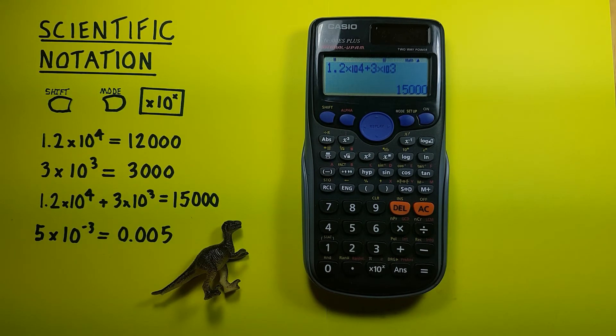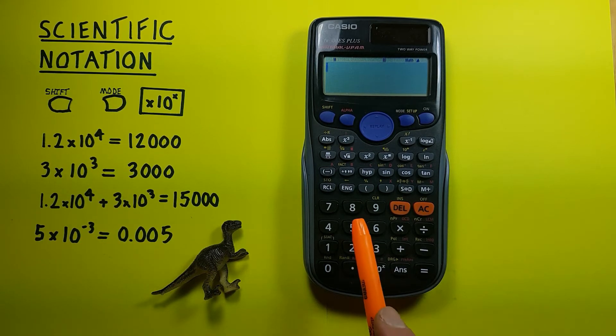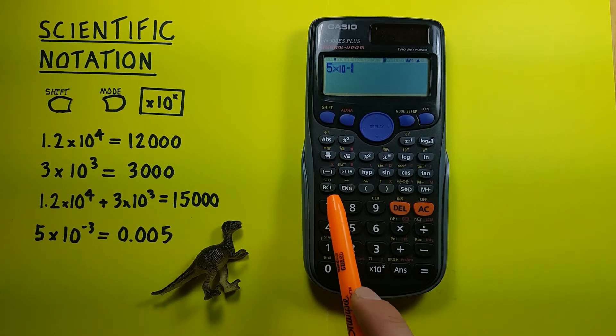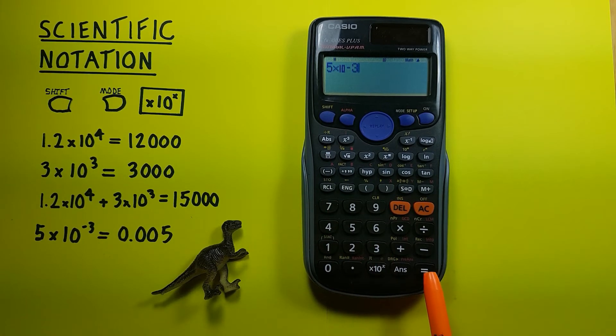We can also use very small numbers in scientific notation. For example, if we had 5 times 10 to the power of negative 3, we would enter 5 times 10 to the power of negative 3, and equals.